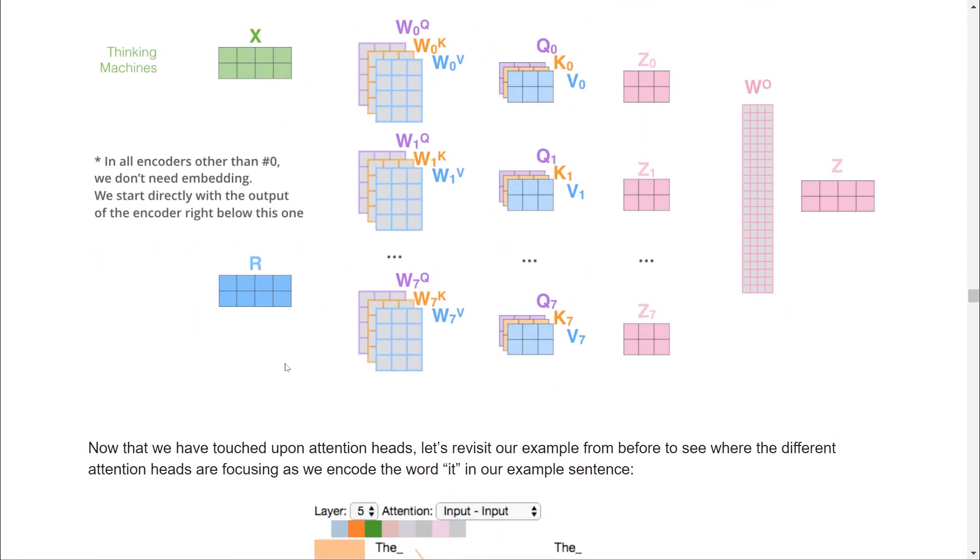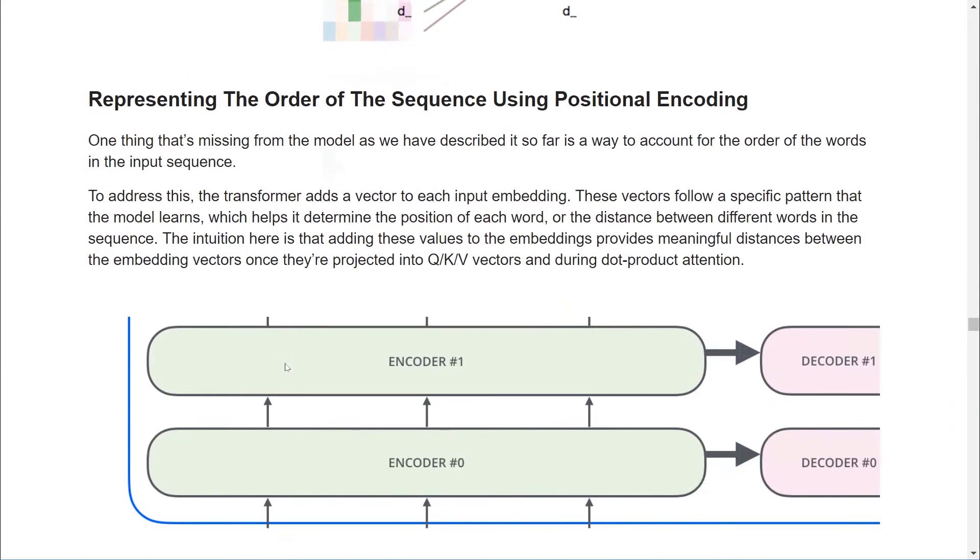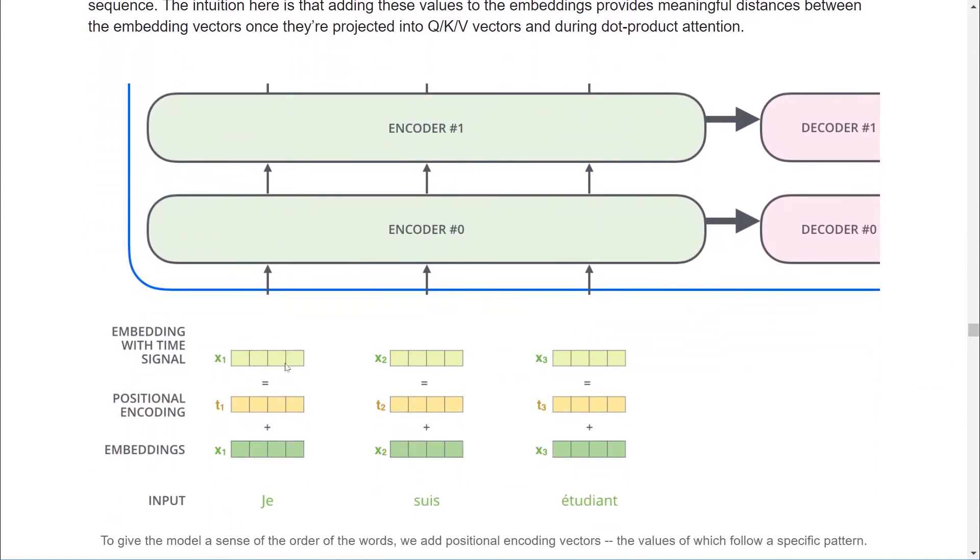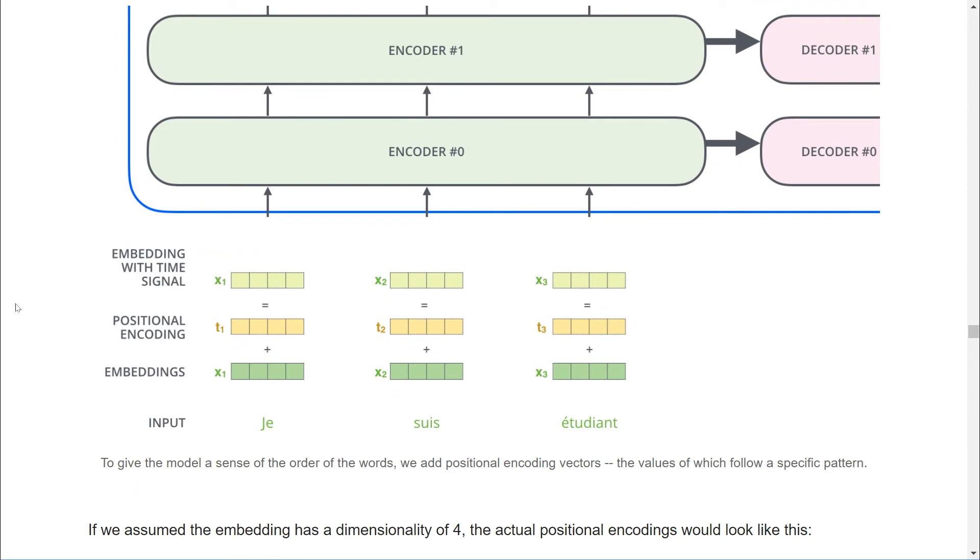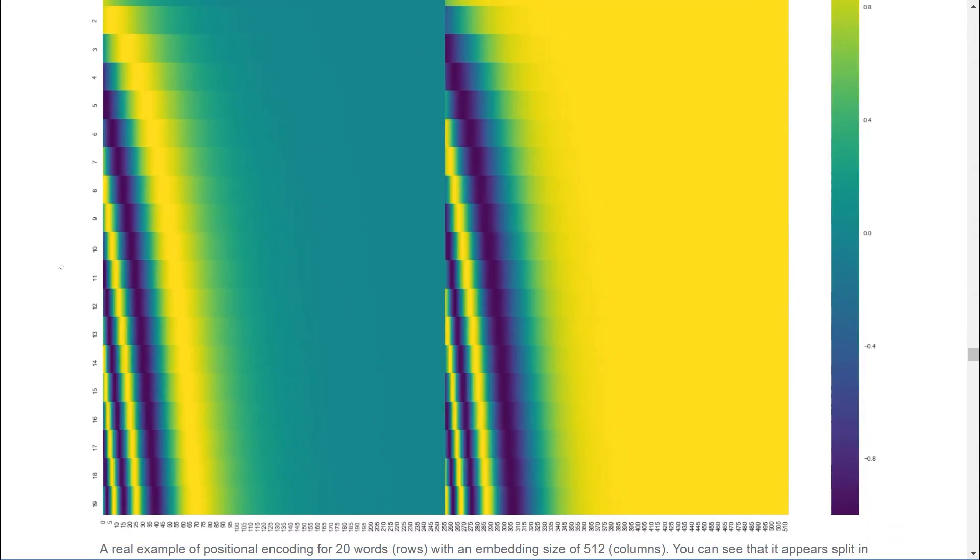Moving on, since we're not using a recurrent network, we need a way to signal the correct order of the words in the input sequence. The solution is to add a positional encoding to the input word embeddings. These vectors follow a specific pattern that the model learns which helps it to determine the position of each word as well as the distance between different words in the sequence. The values on the left half of the embedding use a sine function, and the values on the right half use a cosine function.